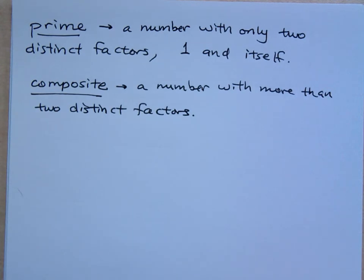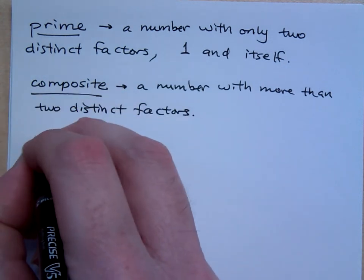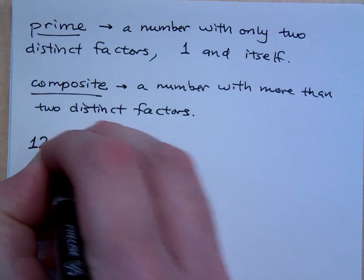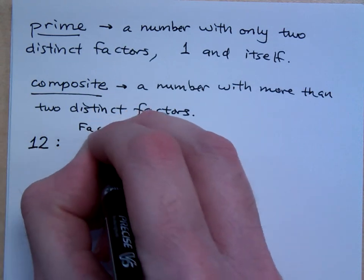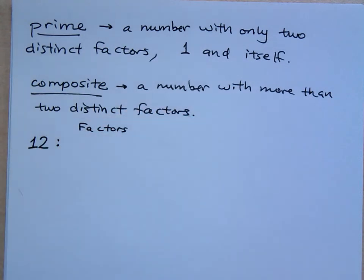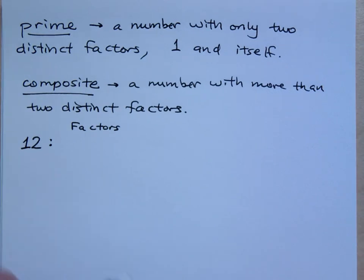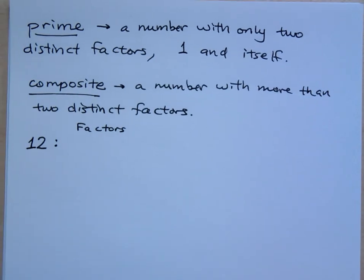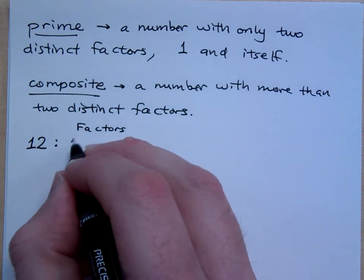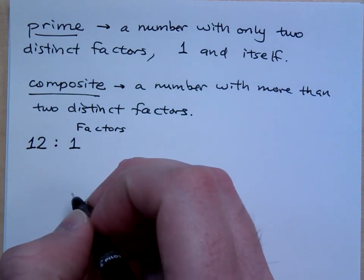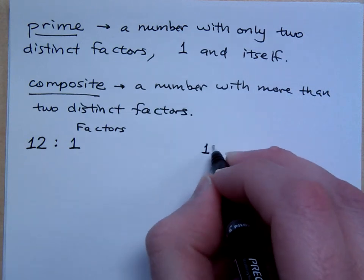So remember, factors, those are the numbers that can divide evenly into a number. If I were to look at the number 12, for example, and I were to list the factors of 12, what are all of the numbers that could go into 12 evenly? And if it helps you, do them in factor pairs. Meaning, if I start off with one, one and what gives me 12? 12. So, one and 12.